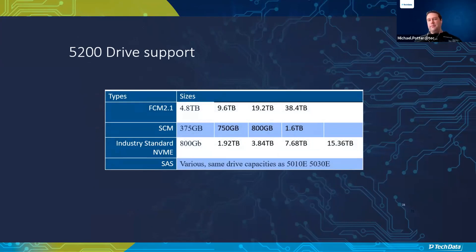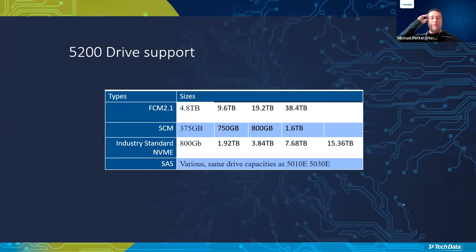The flash core modules are our secret sauce — available in 4.8TB, 9.6TB, 19.2TB, and 38.4TB. Storage class memory is much smaller but delivers absolute top-tier performance, so use it sparingly and model carefully. We also offer industry-standard NVMe drives at 800GB, 1.92TB, 3.84TB, 6.68TB, and 15.36TB.